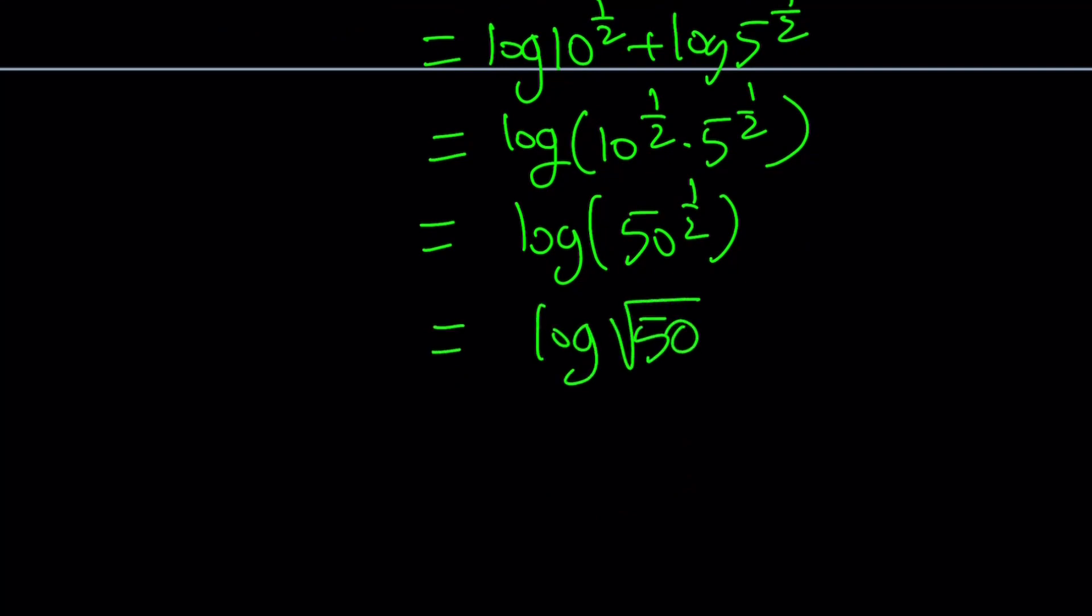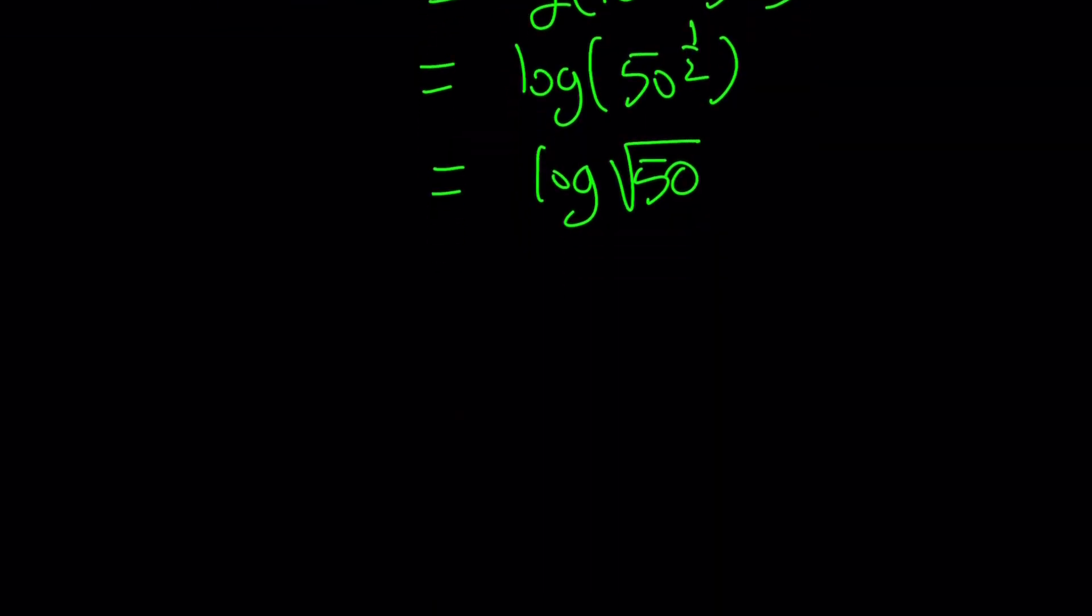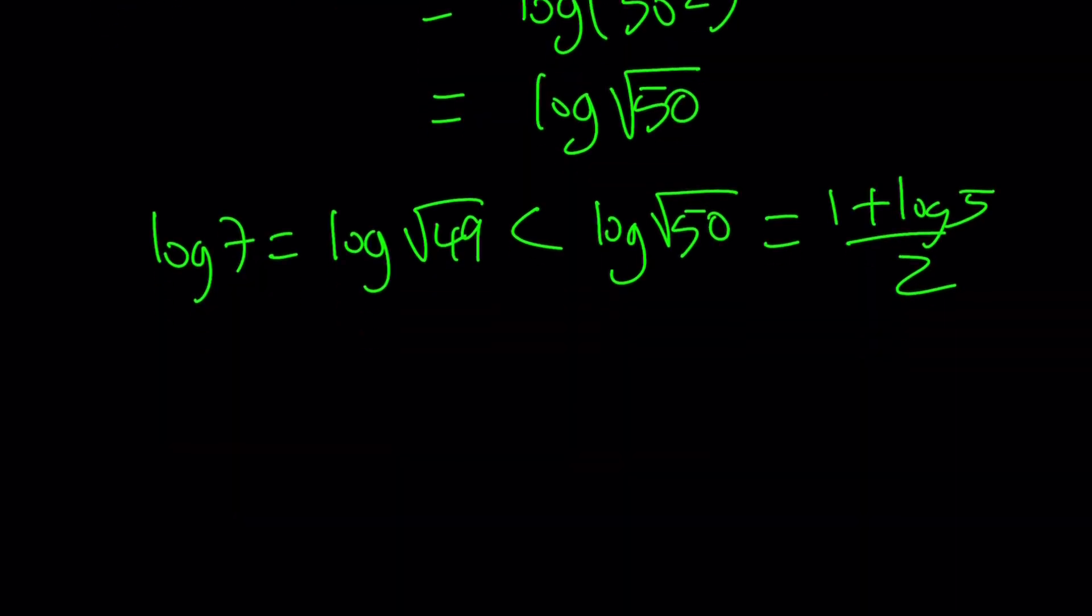But how does that work? Well, whatever we started off with, it turns out to be this one. Now log 7 can be written as log square root of 49. And obviously that is less than log square root of 50, which happens to be 1 plus log 5 over 2. Remember, we just worked on it to make it that way. Therefore, this is going to be our larger number.